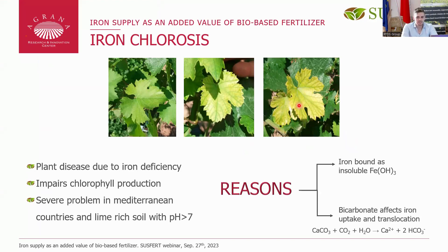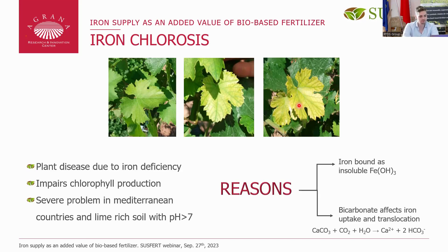Where is iron deficiency most common? It is in Mediterranean countries with a lot of lime in the soil, which raises the pH over 7, and therefore the iron is bound as insoluble iron oxide. Furthermore, bicarbonate affects iron uptake with the same effect — it alkalizes or buffers the soil to a pH a little bit over 7, and therefore hinders the iron uptake of plants.